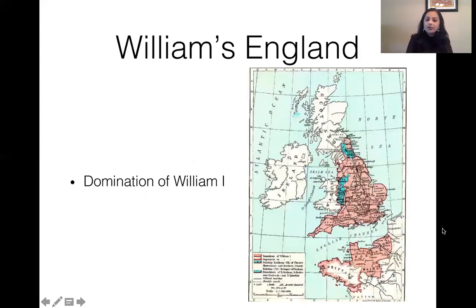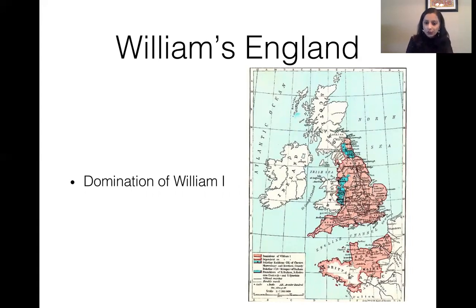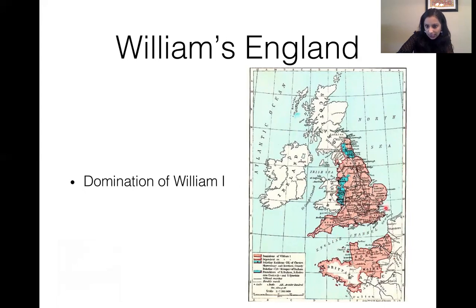Here is a map of William's England. This is William the Conqueror, who became the king of England after conquering and killing Harold. You can see where the Normans came from, and they had to cross the English Channel in order to reach Hastings and conquer England.